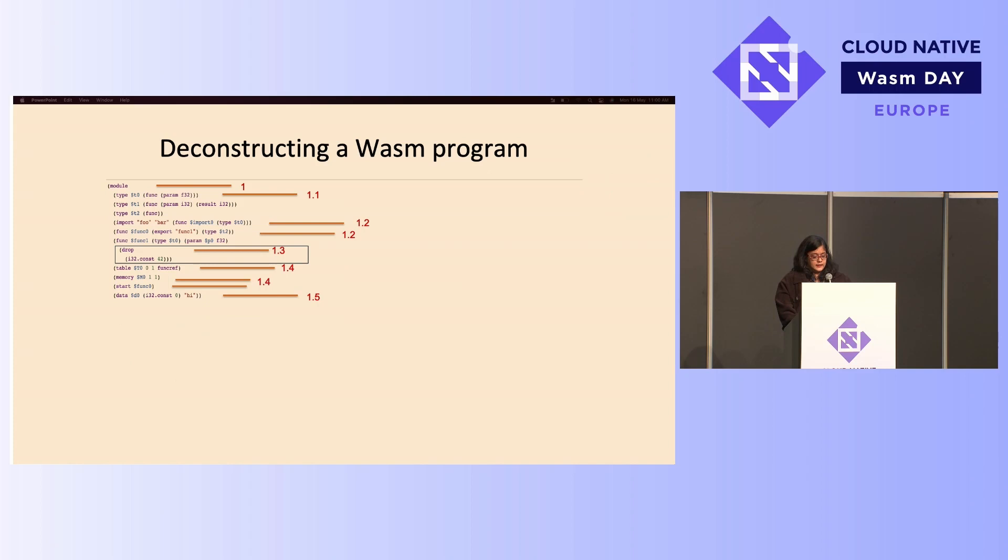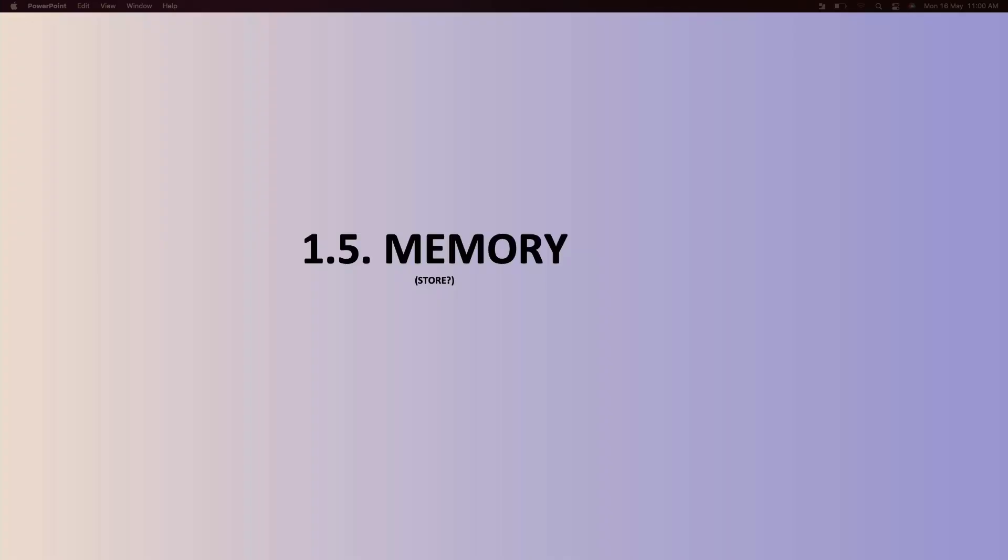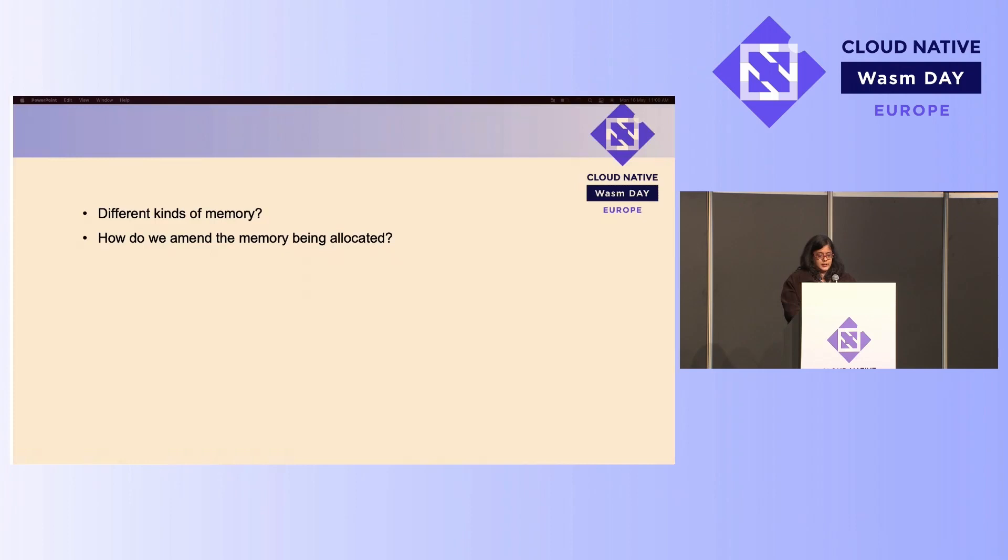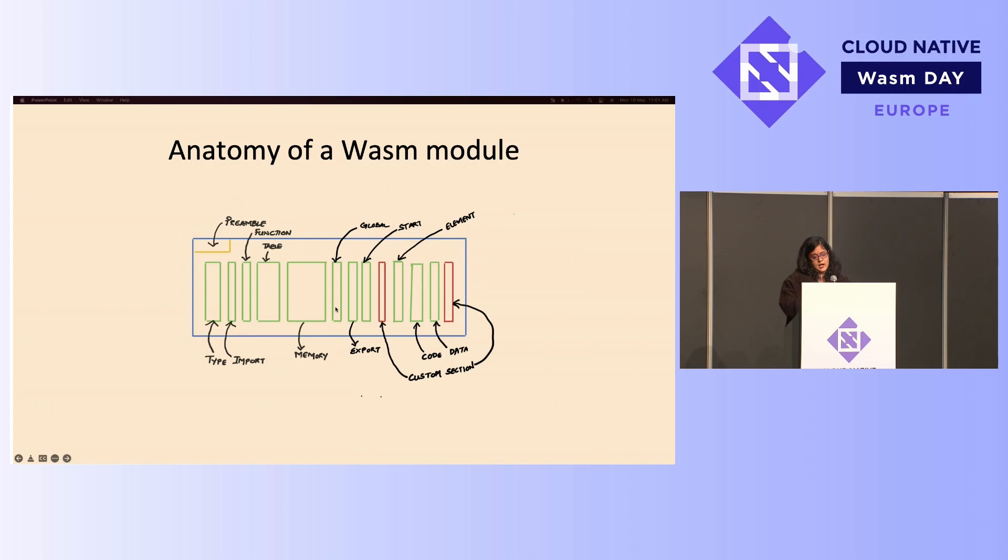So that being said, all of this needs to work somewhere in memory because you need to somehow store values, you need to retrieve values. And we all know there is something called linear memory in WebAssembly. So can we actually amend the memory being allocated to us because WebAssembly is following a binary instruction format? And what are the different kinds of memory? Now, as we all know, there is the linear memory that I won't go deep into because it's allocated with every module. And in fact, if I can just switch back to the slide for the anatomy, you see that it is allocated within the module itself. So there is a section dedicated to memory.